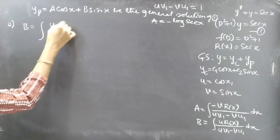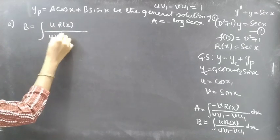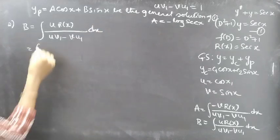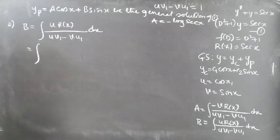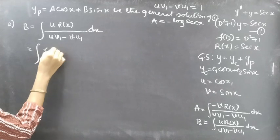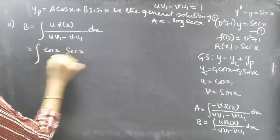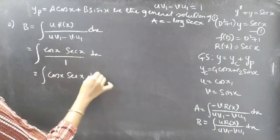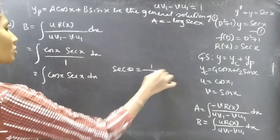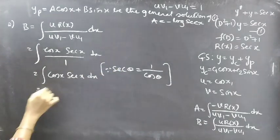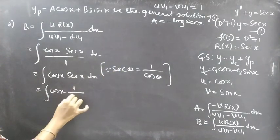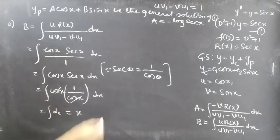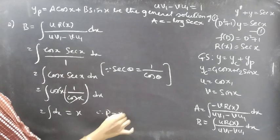Now finding b: b = ∫(u·r(x))/(uv' - vu') dx = ∫(cos(x)·sec(x)/1) dx. Since sec(x) = 1/cos(x), cos(x) and sec(x) cancel, leaving ∫dx = x. Therefore b = x.